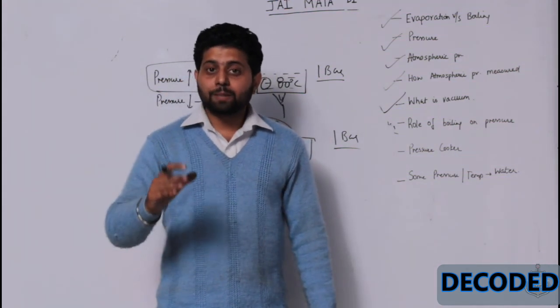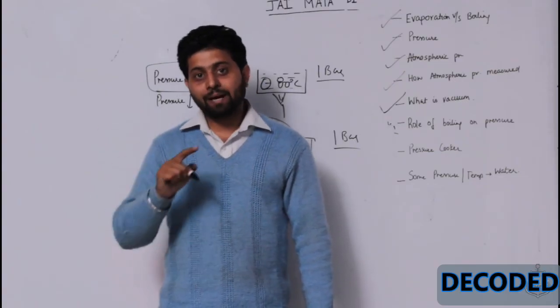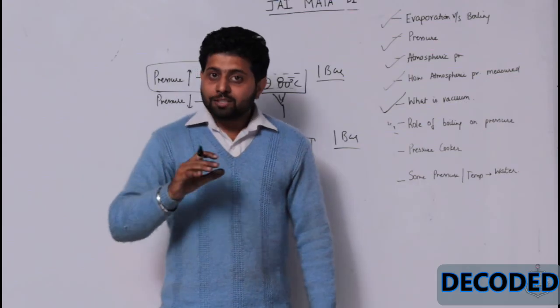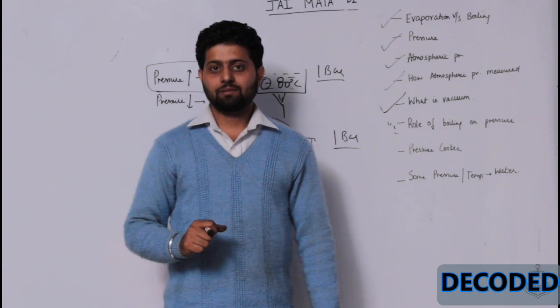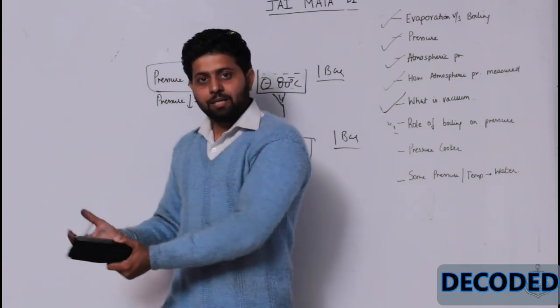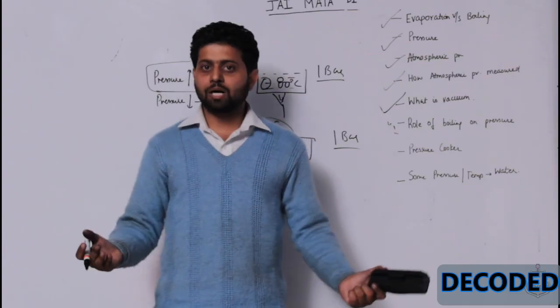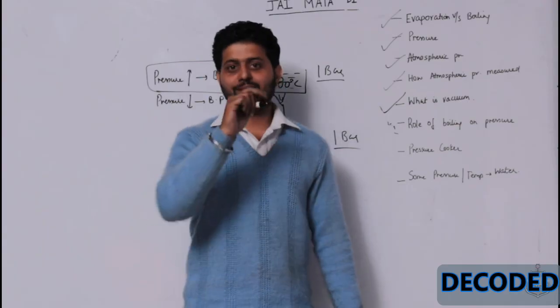We create vacuum up to 90 percent, that is minus 0.9 bar pressure. Gauge pressure minus 0.9 bar. So, the sea water, whenever it comes in, it starts boiling even at 45 degree centigrade temperature. And then we condense it and we get easily fresh water available on ship itself. So, that's jugaad, that's science and that's technical knowledge. Thank you very much. Jai Matadi.